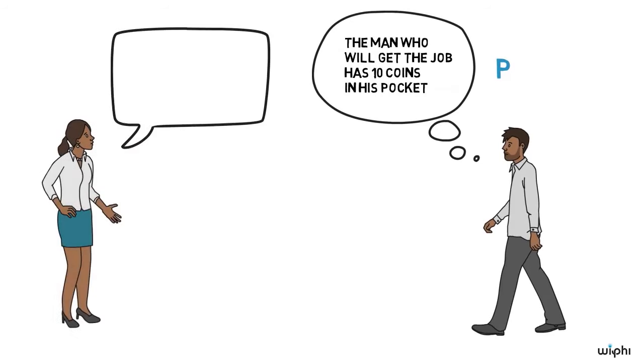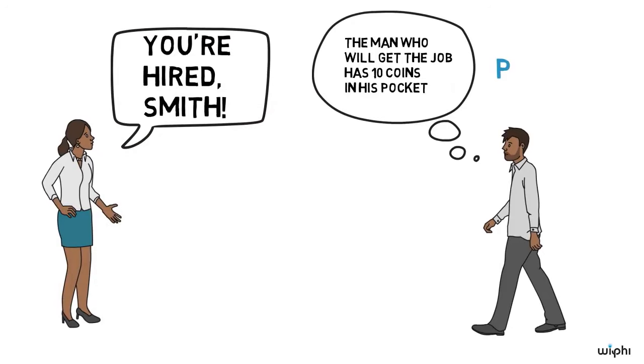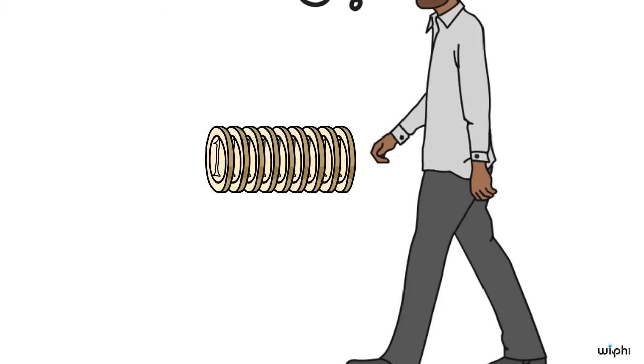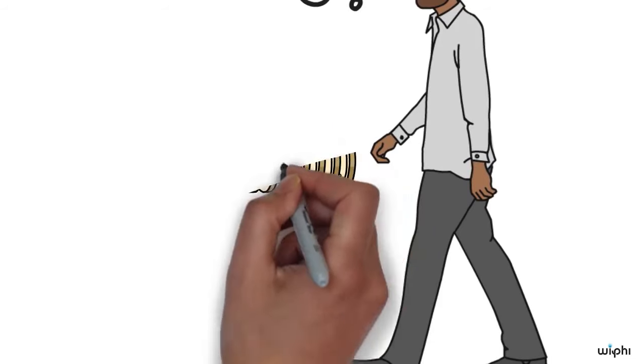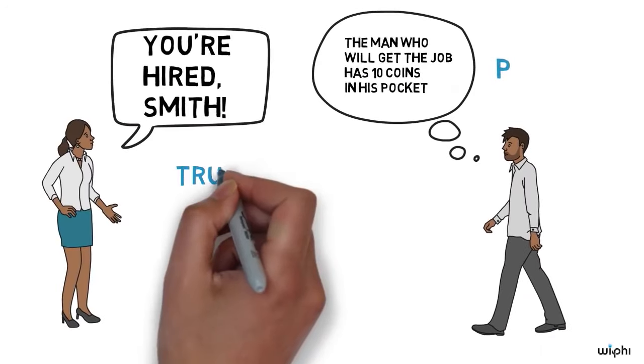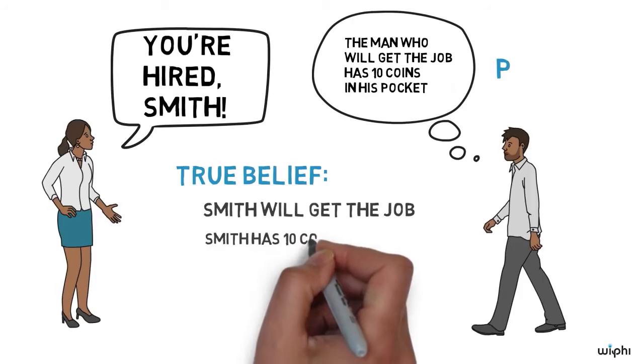For some reason, at the last minute, the company ends up hiring Smith, not Jones. And unbeknownst to Smith, he happens to have 10 coins in his pocket as well. So when Smith believes that the man who will get the job has 10 coins in his pocket, what he believes is true, because Smith will get the job, and Smith has 10 coins in his pocket.